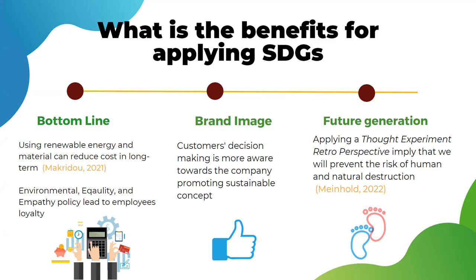Lastly, if we use a thought experiment from a future perspective, we will want to prevent harm to nature and humanity going forward. For example, ask yourself: what would you like your grandparents to have done differently in terms of nature and humanity destruction? By using this concept, it indicates that we will decide to sustain humanity and nature as much as possible to prevent harm for future generations.